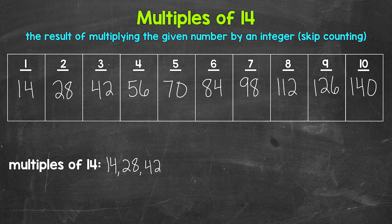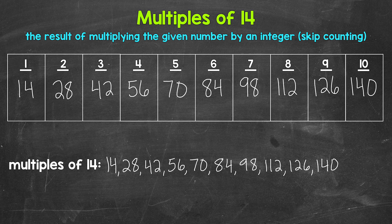So we have 14, 28, 42, 56, 70, 84, 98, 112, 126, 140, and those continue on.